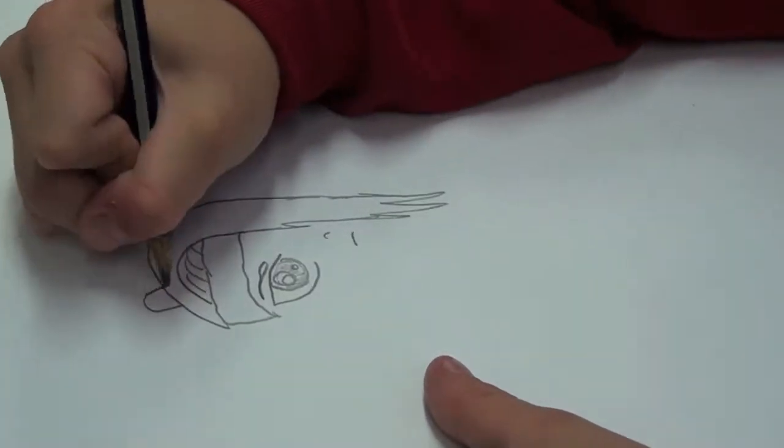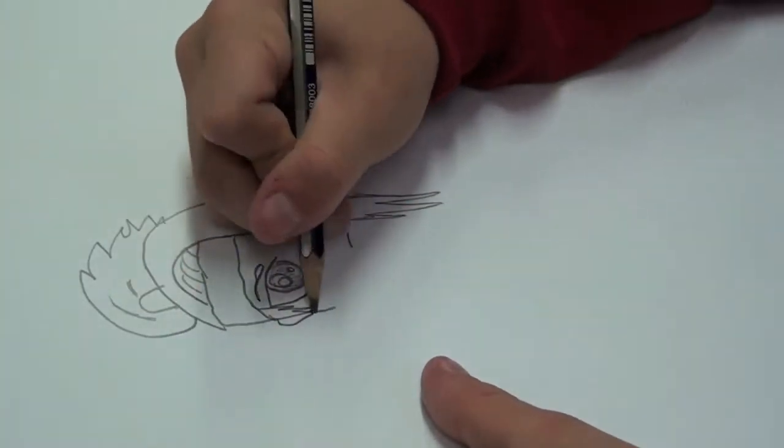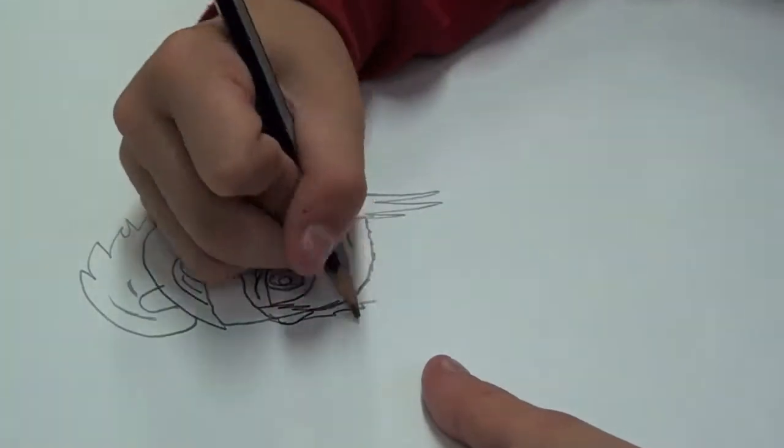Draw his eyebrow, then the nose, then the mouth. Next to the eye, draw a piece of hair from the side, draw his ear and some more hair.